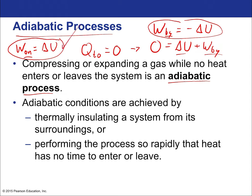Adiabatic conditions are achieved by thermal insulation, because that causes Q = 0 by preventing any heat flow with the outside world. Is there such a thing as perfect insulation? No. So you have to do the process rapidly — that's the only way to get anything approaching a good estimate of an adiabatic process. Because you can never have perfect insulation, the only way to approximate adiabatic conditions is to have good insulation and have the process happen quickly, before equilibrium can be reached.